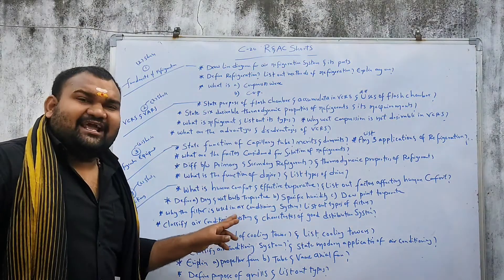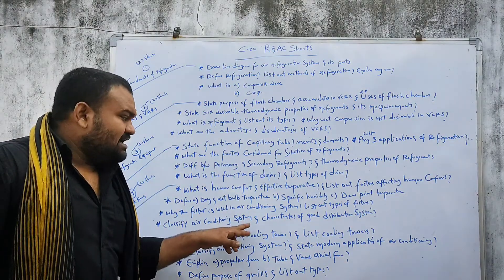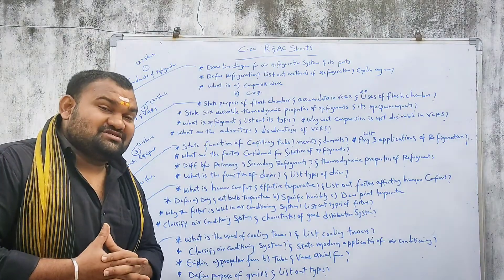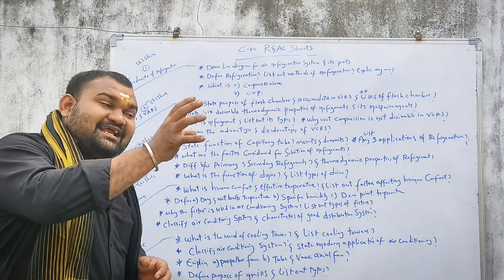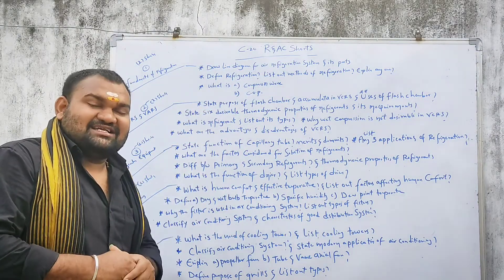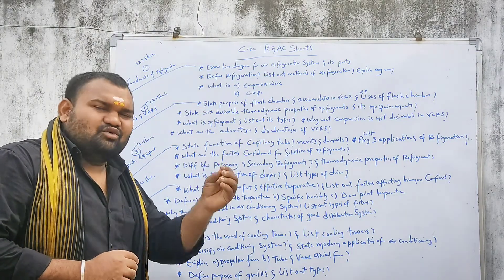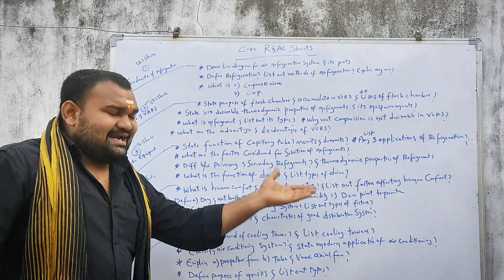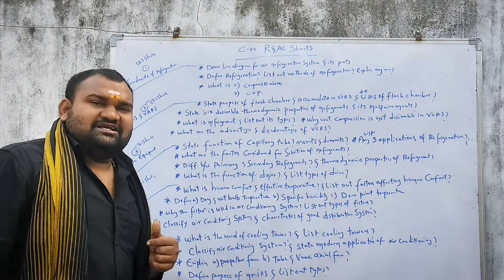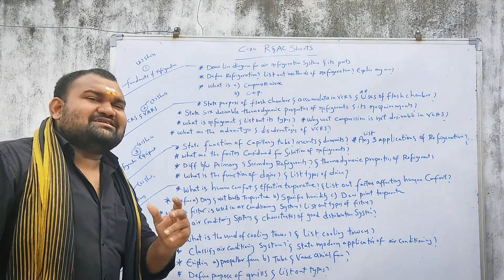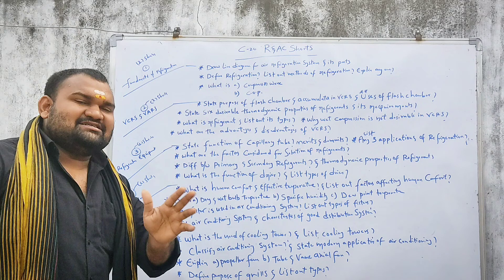Classify the air-conditioning system and characteristics of a good distribution system. The air conditioning system is classified into 3 or 4 types. The characteristics of a good distribution system determine how air conditioning distribution happens.